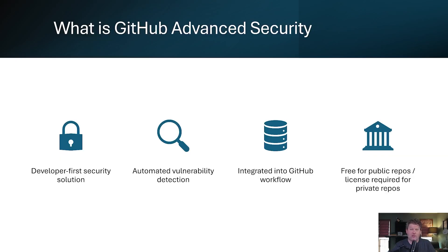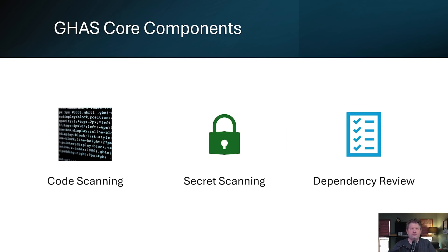Let's start with the basics. GitHub Advanced Security is a suite of security tools designed to help developers find and fix vulnerabilities directly in their development workflow. The key word here is developer first. These aren't security tools that slow you down or require you to leave your GitHub environment. GHAS consists of three core components: code scanning, secret scanning, and dependency review.